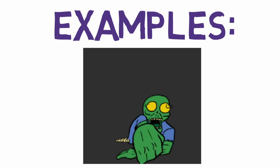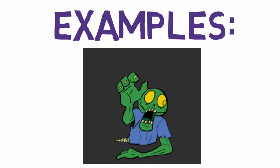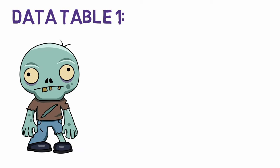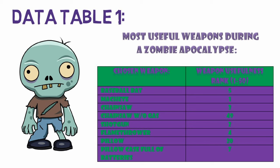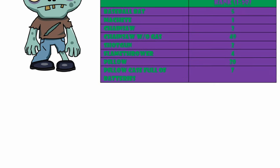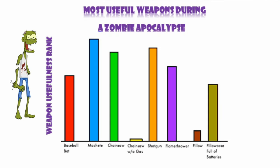So let's look at some examples. I'll give you the data, and you determine should it be placed in a bar or line graph. Data table one: the most useful weapons to use during a zombie apocalypse. Study the information in the data table and determine should a bar or line graph be used. The proper graph for this data would be a bar graph, because each of the different weapons represent a unique category compared to each other, most properly displayed as a bar graph.